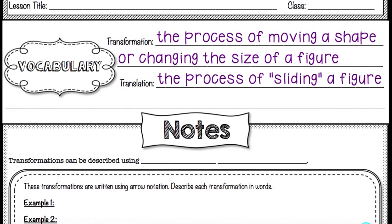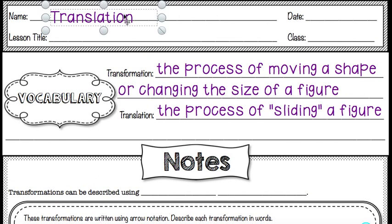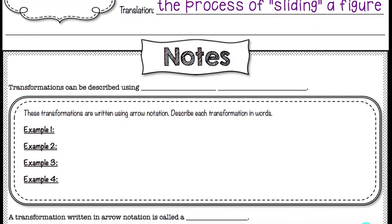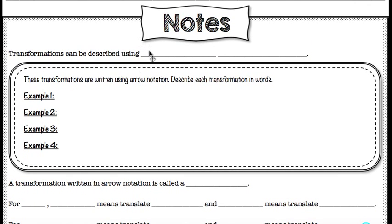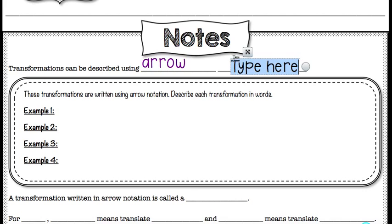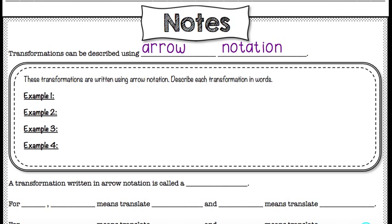But today we're just going to focus on translations. Transformations can be described using something called arrow notation, and we're going to look at how you use arrow notation to describe translations. Let's start with a couple of examples. These transformations are written using arrow notation — describe each transformation in words.